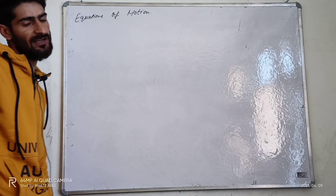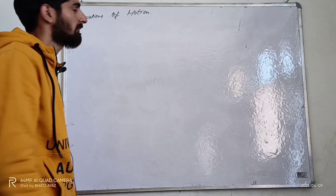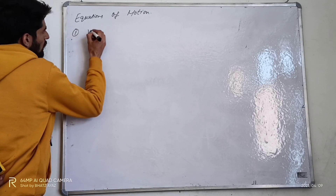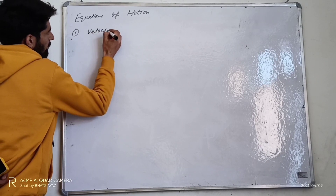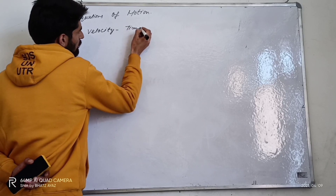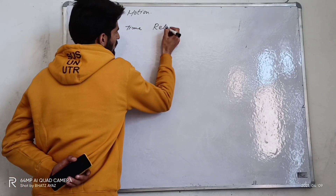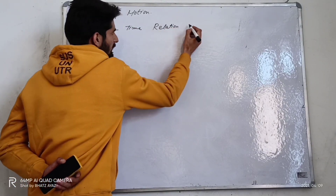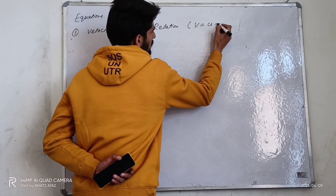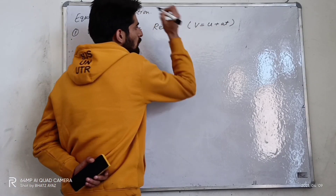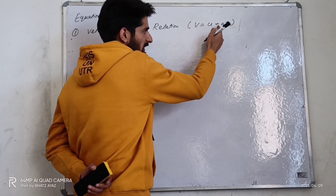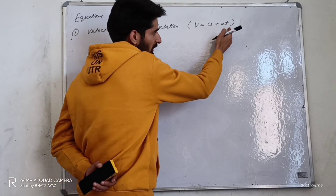There are three types of equations of motion. The first one is the velocity-time relation, and that equation is v is equal to u plus at. Here v is the final velocity, u is the initial velocity, a is the acceleration, and t is the time.